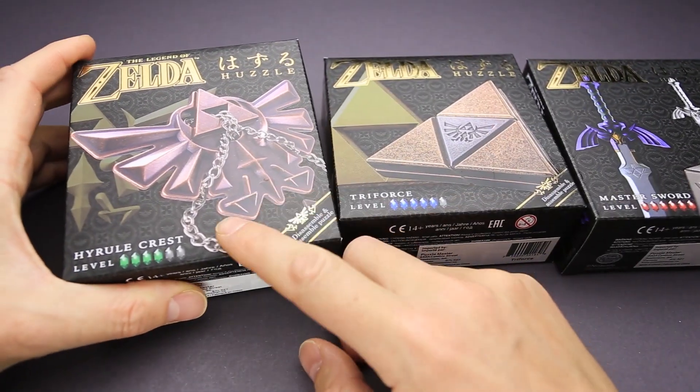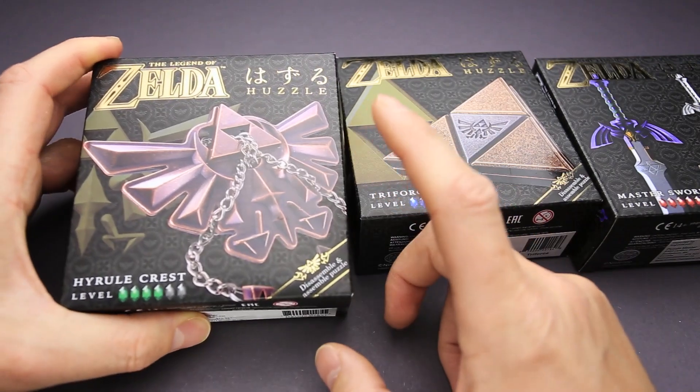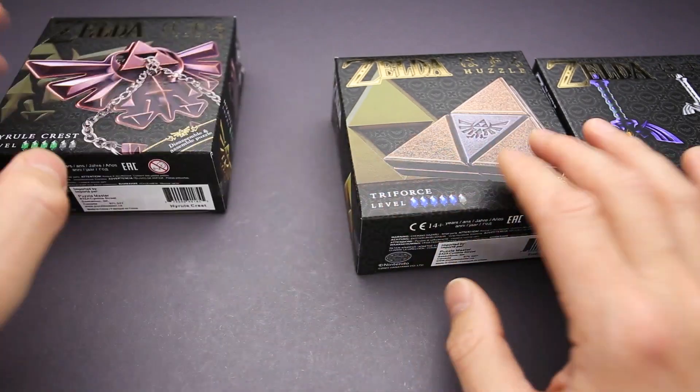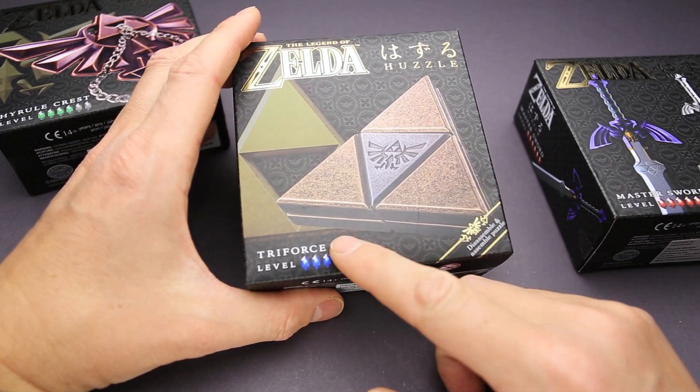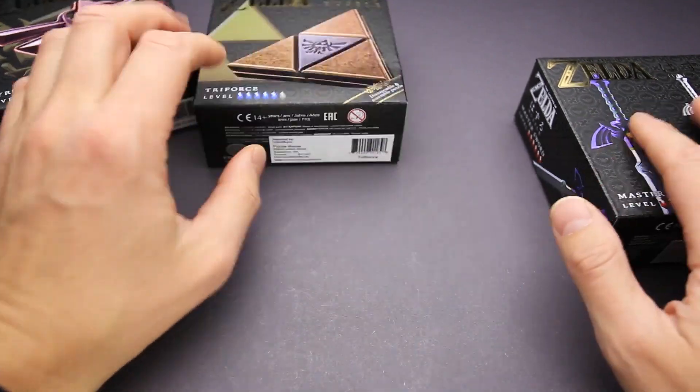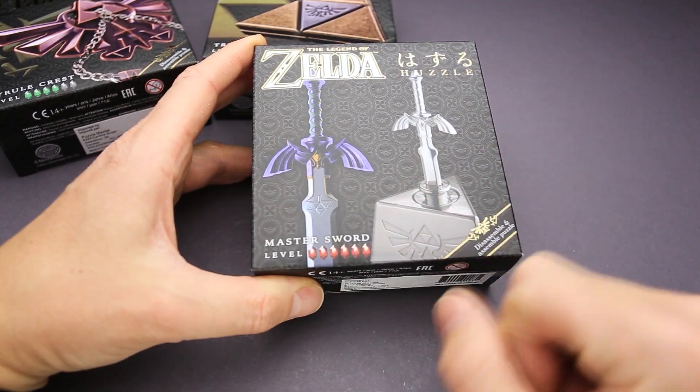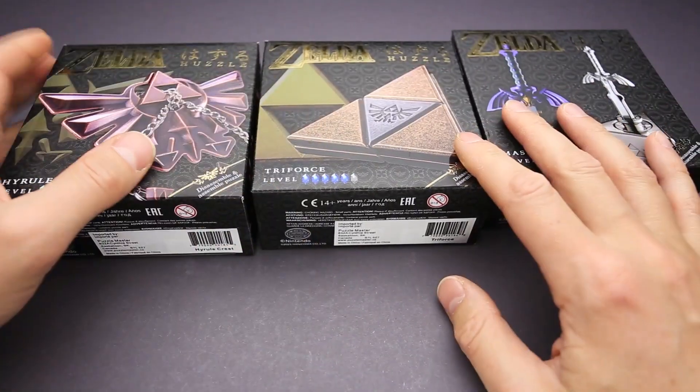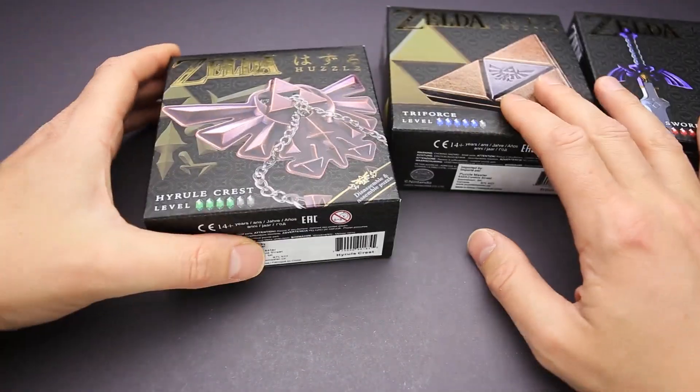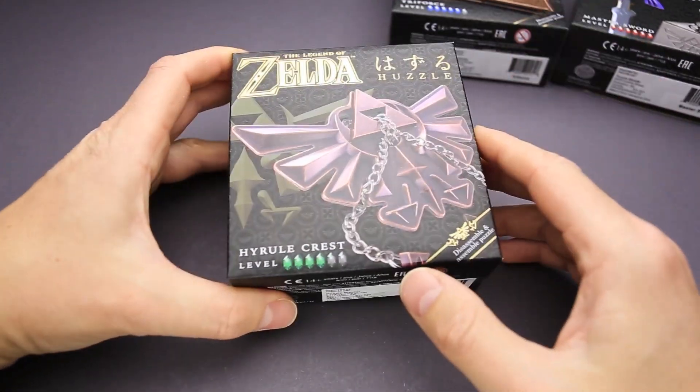The first puzzle is called Hyrule Crest. It has a difficulty level four out of six and the goal is to take it apart and reassemble it again. The second one has a difficulty level five out of six and it is called Triforce. I think that I have an idea how to solve it. And the last one, it is Master Sword. It has difficulty level six out of six. I'm pretty sure all these three puzzles are based on existing Hanayama puzzles, but let's try to solve them and see how it goes.